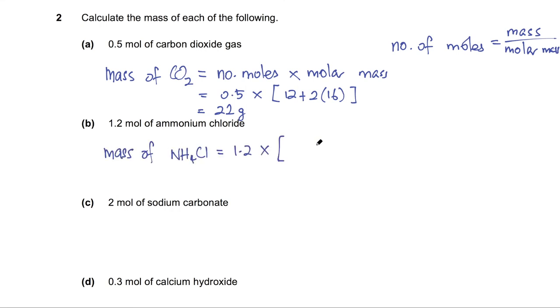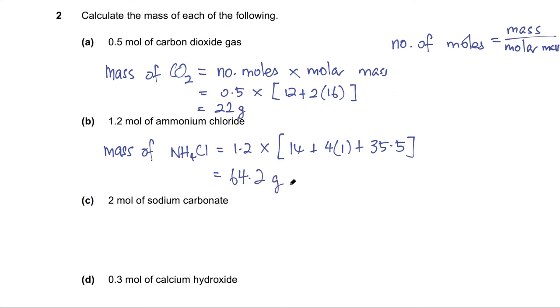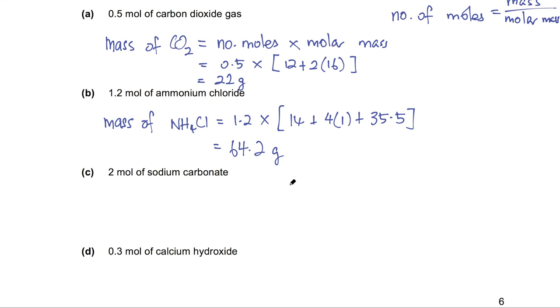Let me show you one more example before you go on to try the remaining questions. Next question, mass of ammonium chloride, we have 1.2 moles times the molar mass, which is NH4Cl, this is 64.2 grams. Pause the video now and try the next two examples.